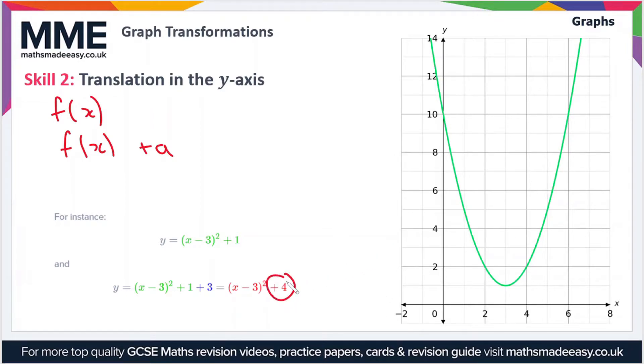What does that look like in terms of a translation? Well the whole graph moves by a value of plus 4. So this minimum point here will move 4 squares upwards. The minimum point will now be here. So the whole graph will look something like this.